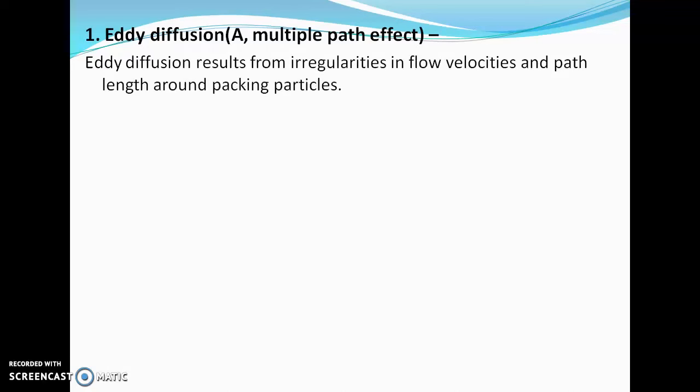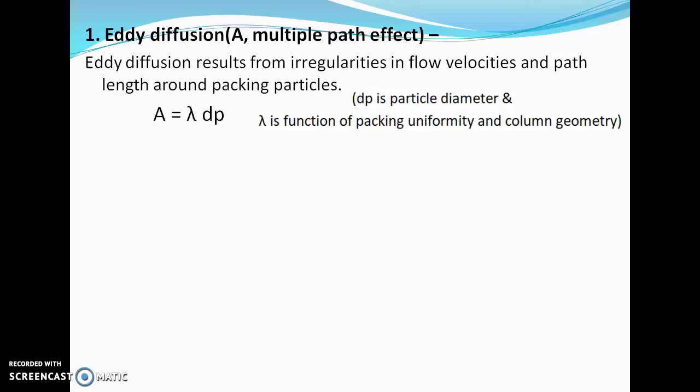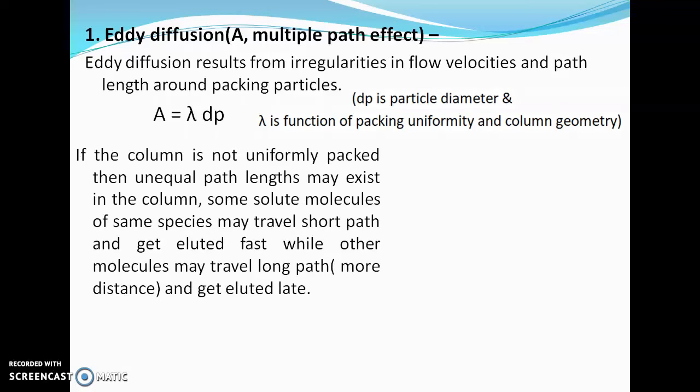The first term is eddy diffusion (A), also known as the multiple path effect. Eddy diffusion results from irregularities in flow velocities and path lengths around the packing. It is calculated by: A = λdp, where dp is the particle diameter of the stationary phase and λ is a function of packing uniformity and column geometry. If the column is not packed uniformly, unequal path lengths exist.